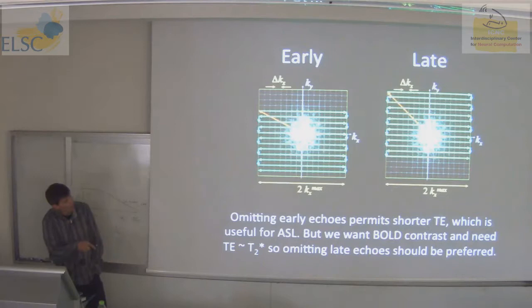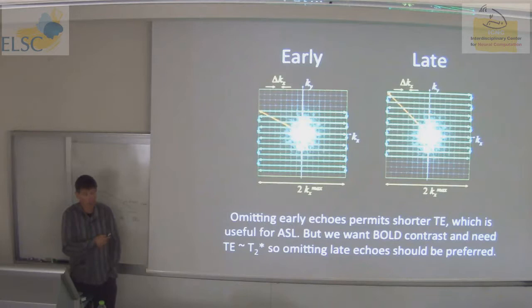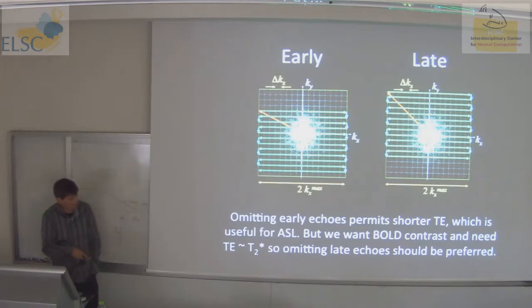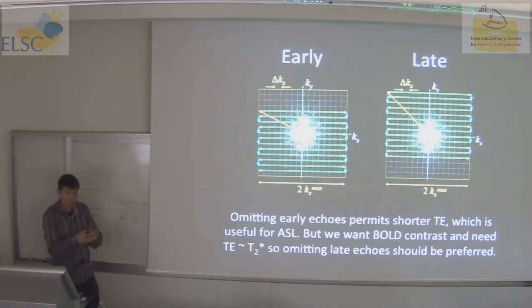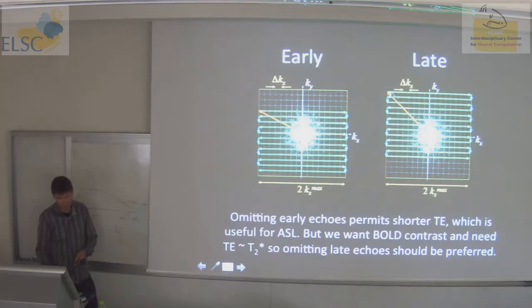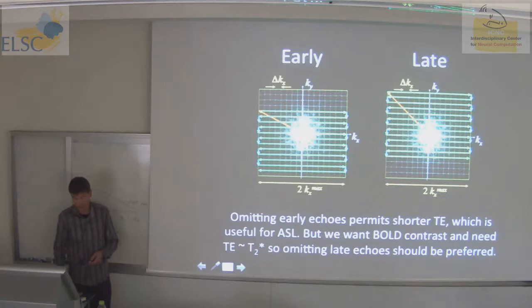Why does it make a difference? Omitting the early echoes allows a shorter echo time, which is great for ASL or other methods where you don't care about TE. But in fMRI, we always want a particular TE because there's always an optimal TE for functional contrast. Dead periods are just wrong — we always want to be encoding and reading information from the scanner. If you have to reach the center of k-space at a particular echo time, this half is fixed, so there's no point omitting the early echoes.